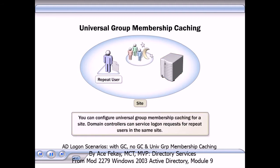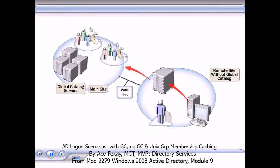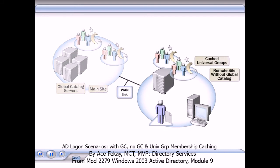You can configure universal group membership caching for a site and enable domain controllers within that site to service log-on requests for repeat users that are in the same site. When a user logs on at a remote site without a global catalog, universal group membership is cached as follows. The first time the user logs on to the local site, the domain controller contacts a global catalog server on the WAN or Wide Area Network. The global catalog returns the user's universal group membership, which is cached on the domain controller. During subsequent log-ons, the domain controller resolves the user's universal group membership at the local site by using the cached information.